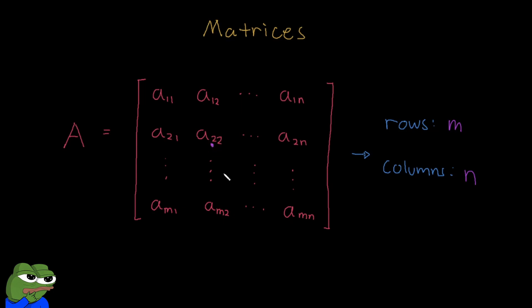So this first number is the row, and the second number is the column. So for example, if I say the element A22, that's the element in row 2 and column 2.